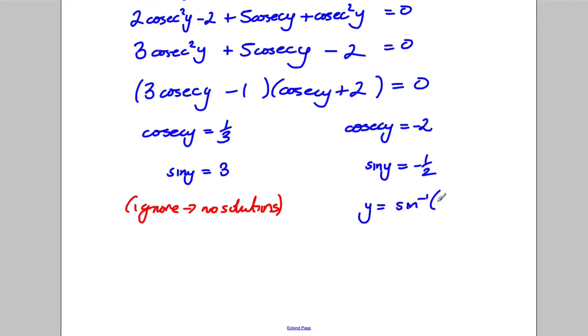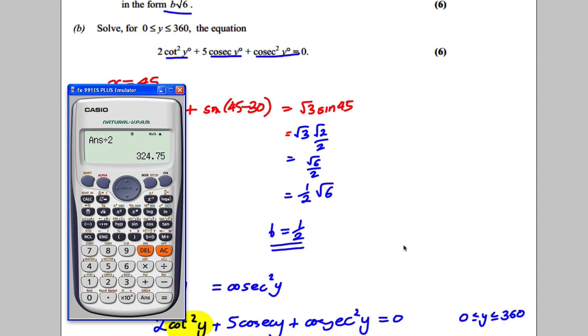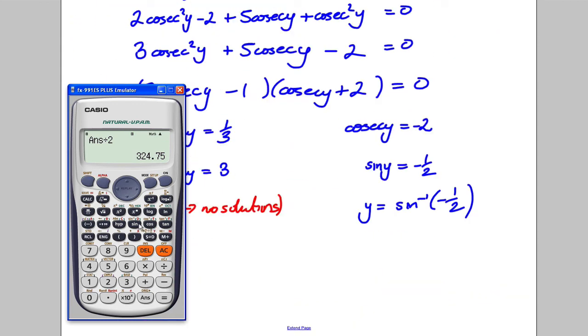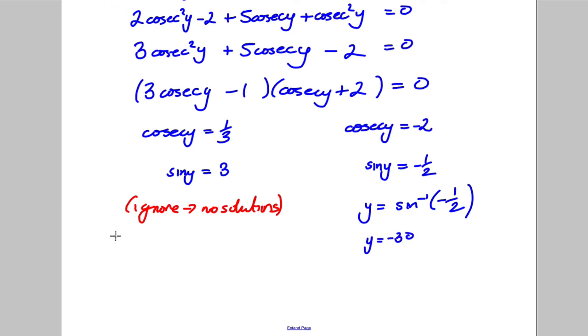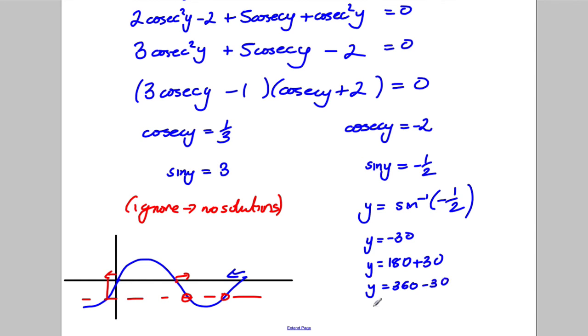Y is the inverse sine of negative 1 half. Calculator out, are we in degrees mode? Yes, we're in degrees mode. Inverse sine of negative 1 half, and we're getting negative 30. So y is equal to negative 30. Let's draw a quick sketch. I'm drawing the sine y at 1 here, and sine looks like this. Negative 30, you can see that would be one answer, 30 back from 0. You can clearly see the other answers are going to be here and here. That's 30 forward from 180, and this one here is going to be 360 subtract 30. So y is going to be 210 degrees and y is going to be 330 degrees.